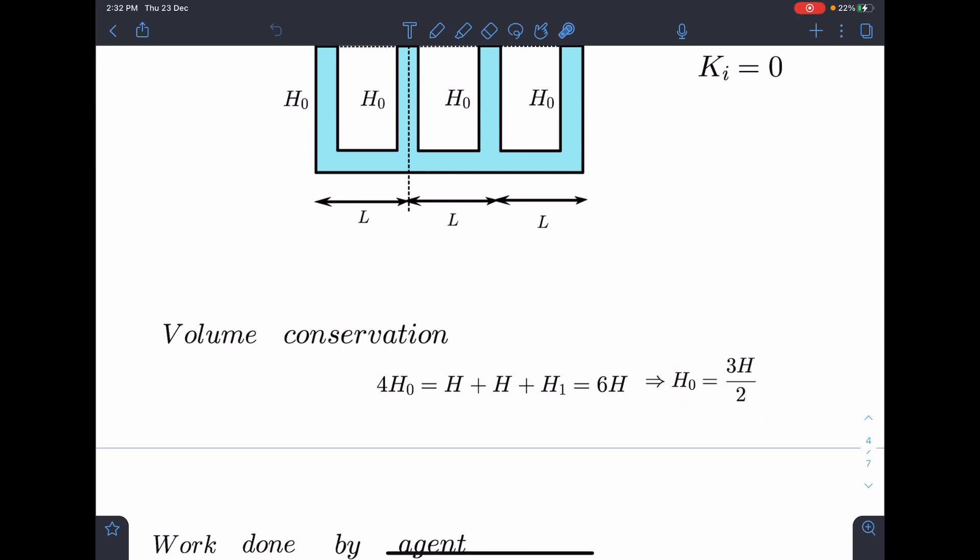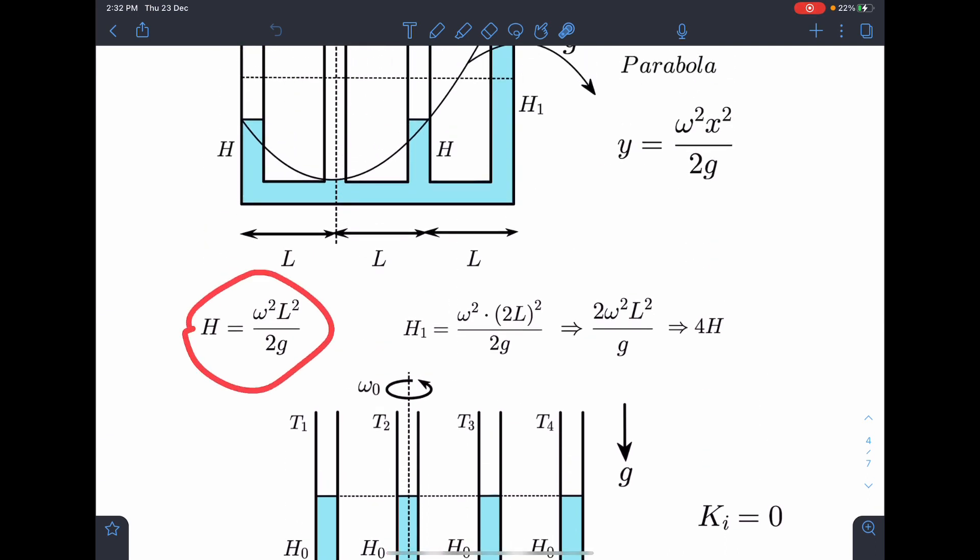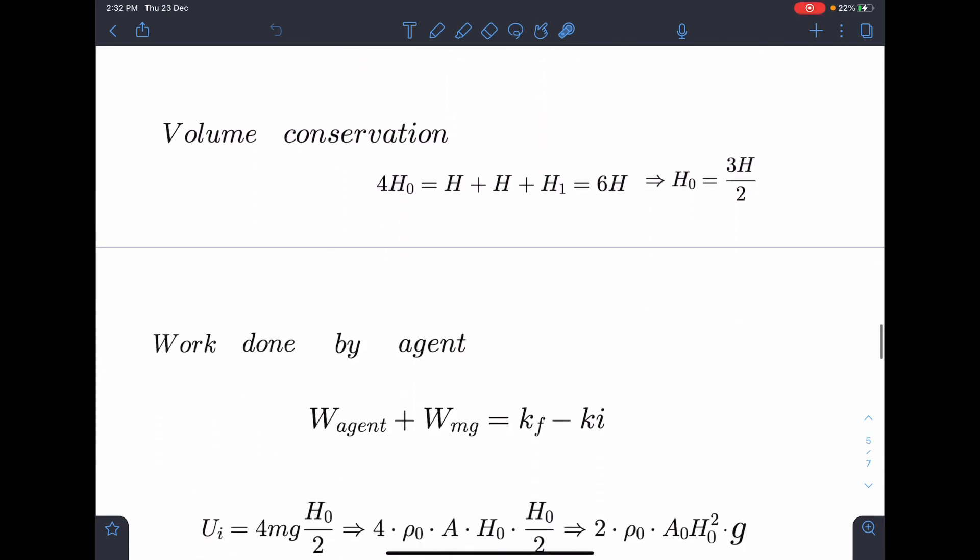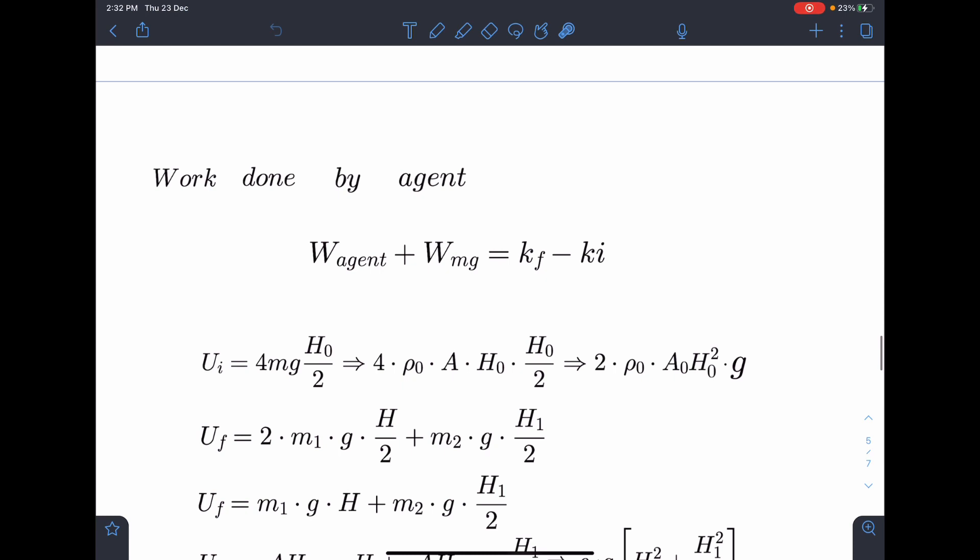So when we substitute the value here, we are going to get h0 is equal to 3h by 2. So in fact, only L is given. So from there, we can figure out for a given L, h value is known to us for a given omega or h1 is also known to us for a given omega. Now here work done by agent, I can apply energy conservation or work energy theorem. So W agent plus W gravity is equal to change in kinetic energy of the system.